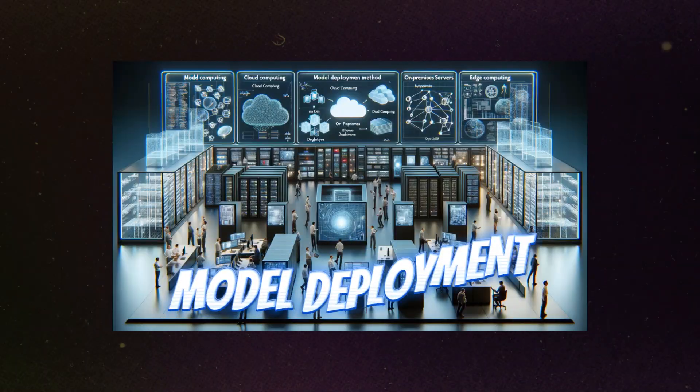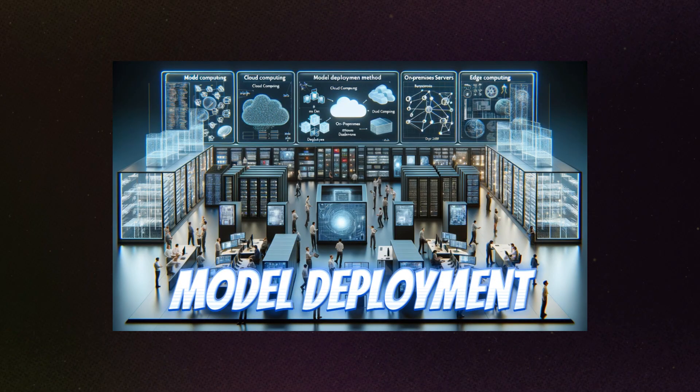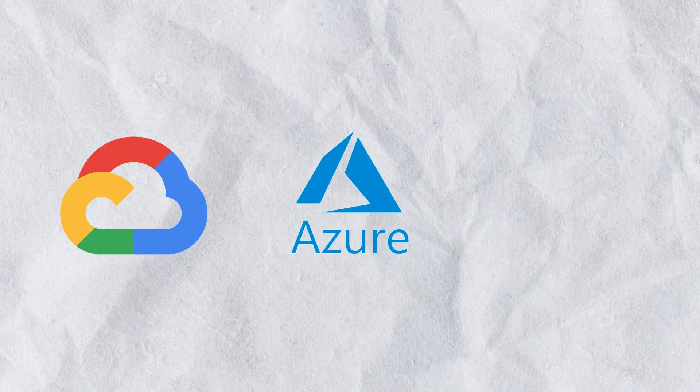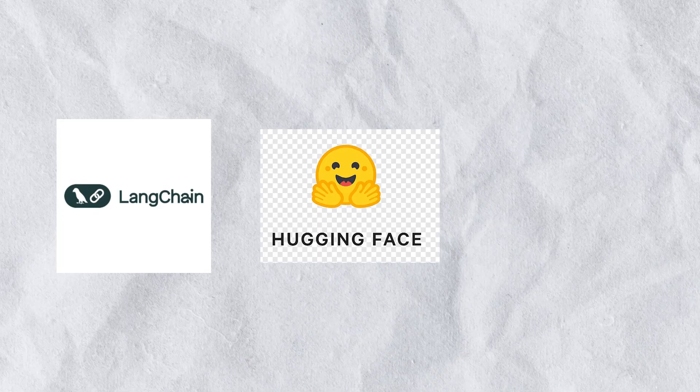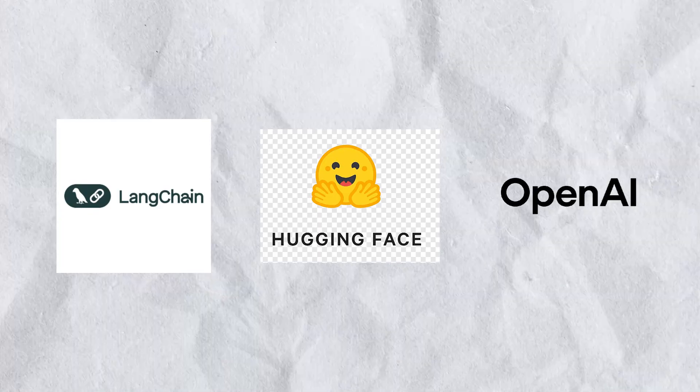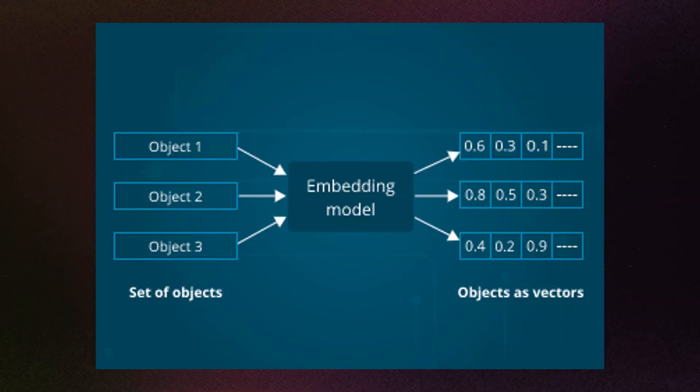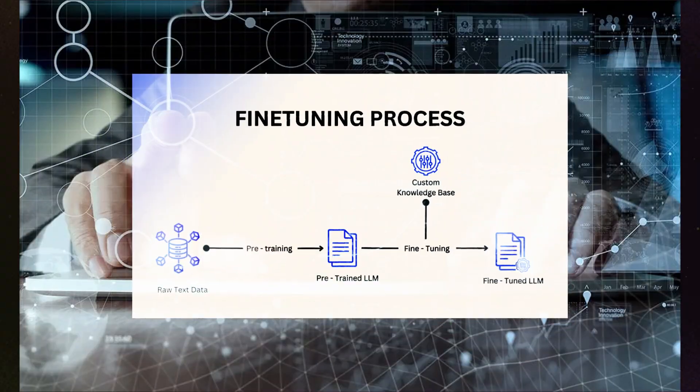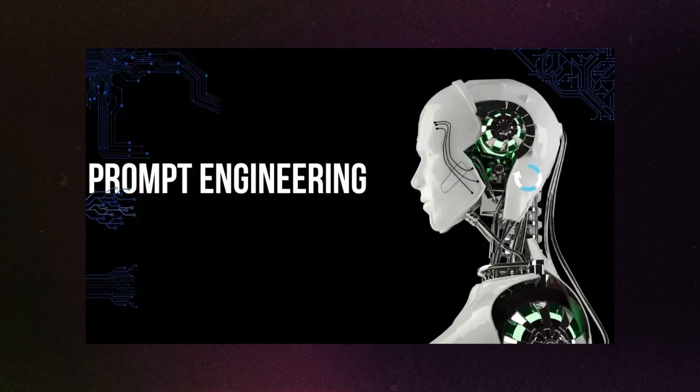Step three is model deployment: dockerize your app and use cloud platforms like GCP, Azure, or AWS. Finally, use LLM and AI tools — tools like LangChain, Hugging Face, or OpenAI. Learn about embeddings, vectors, fine-tuning, and prompt engineering. In AI engineering, your goal is to make actual models reliable and scalable.